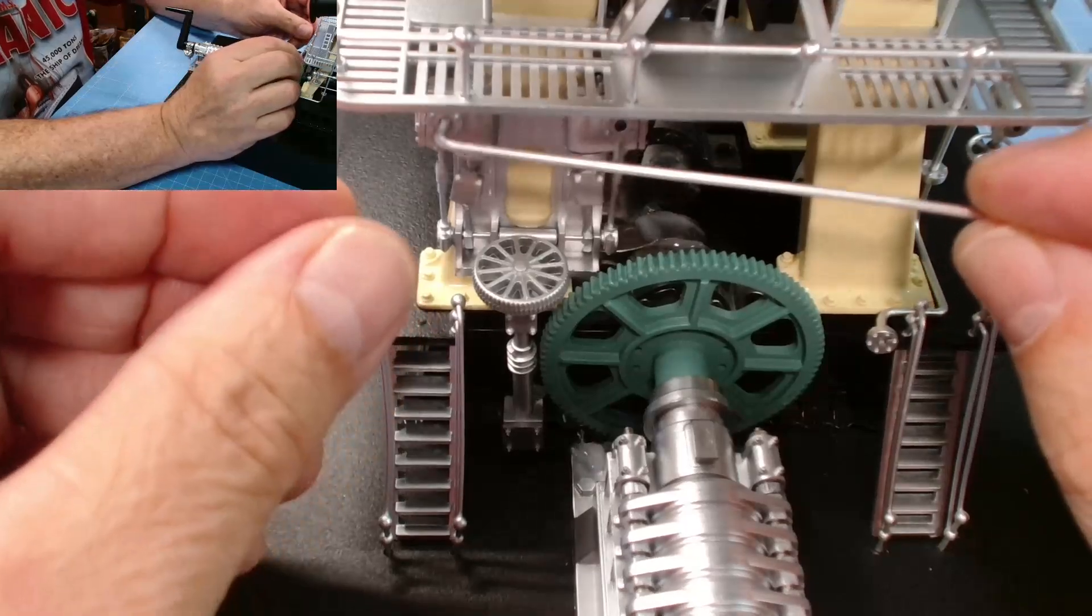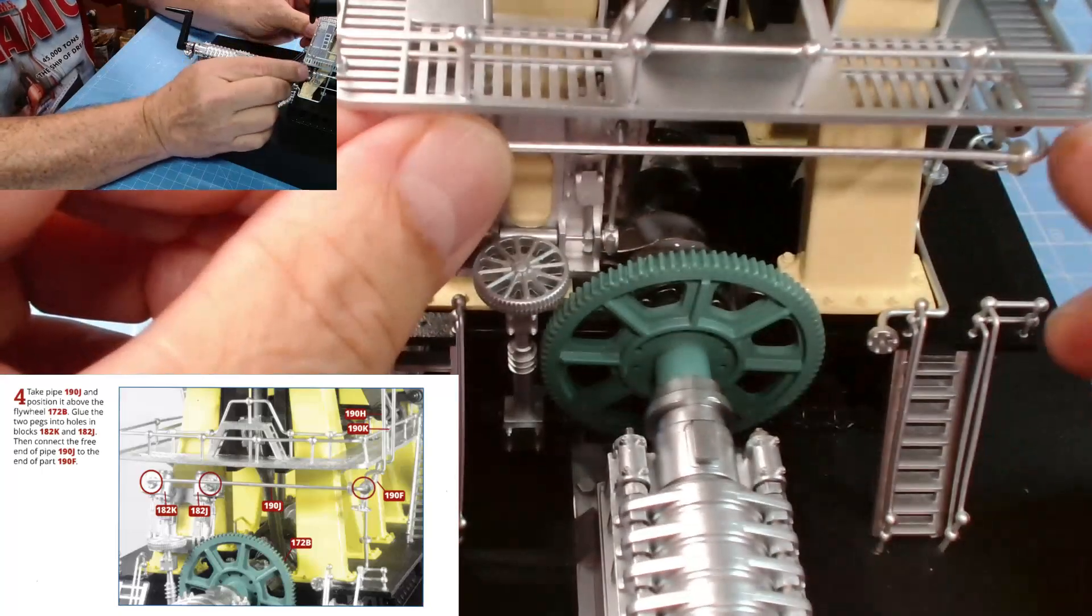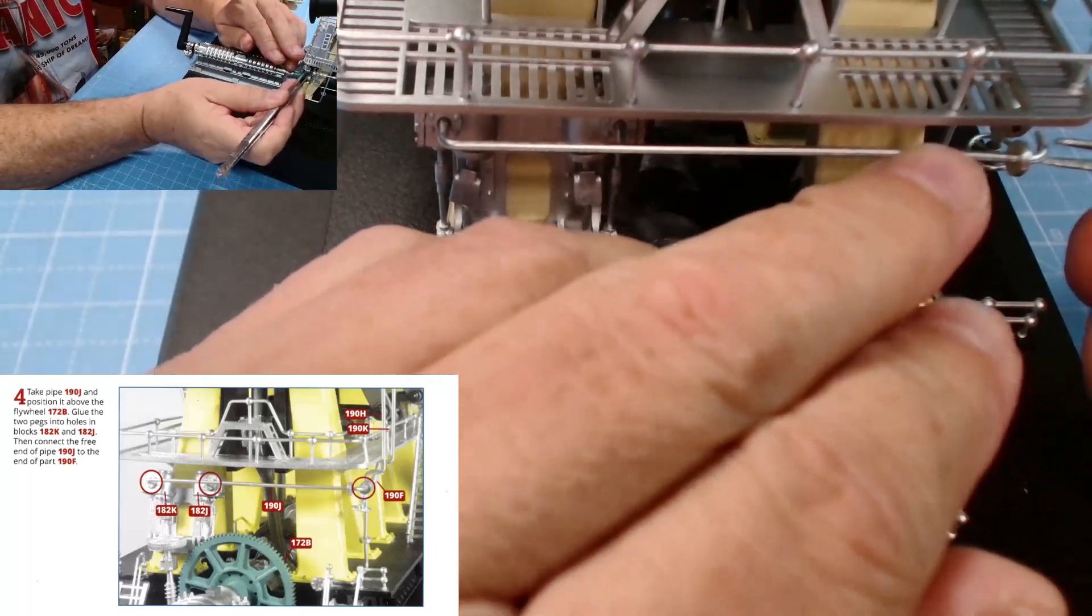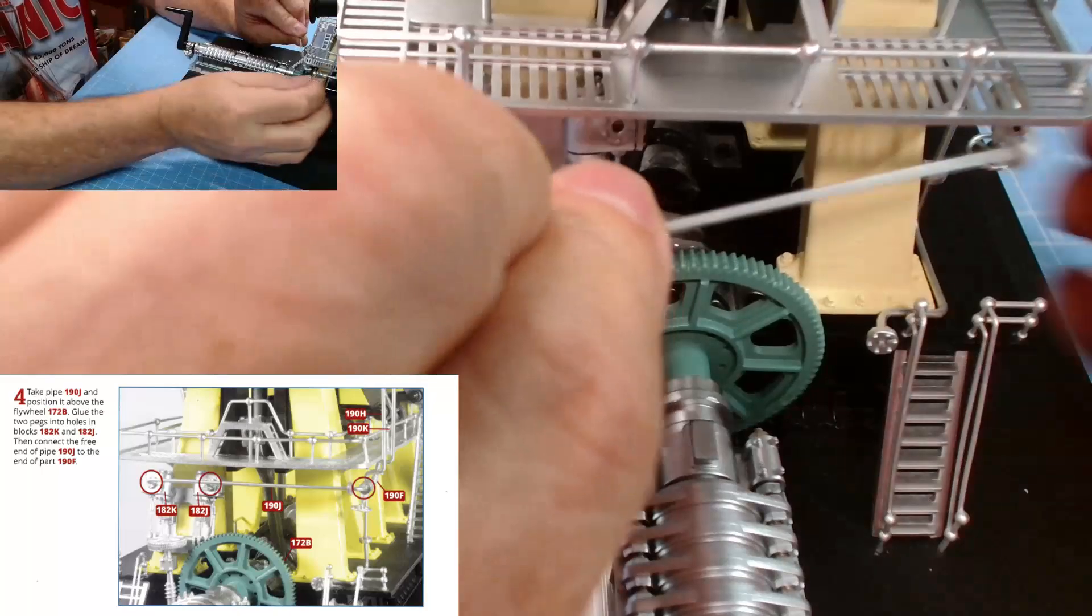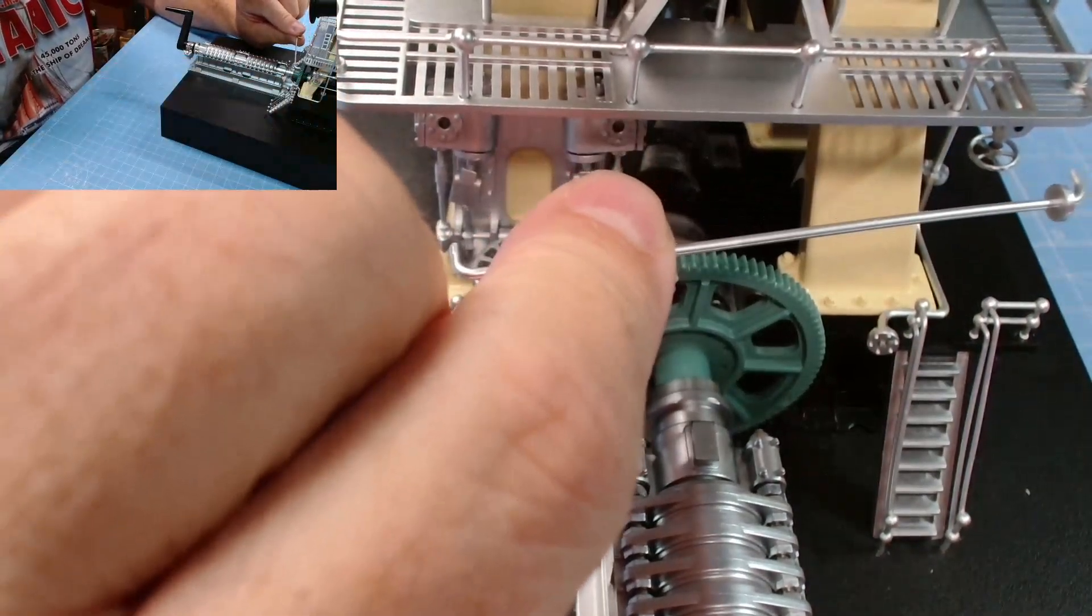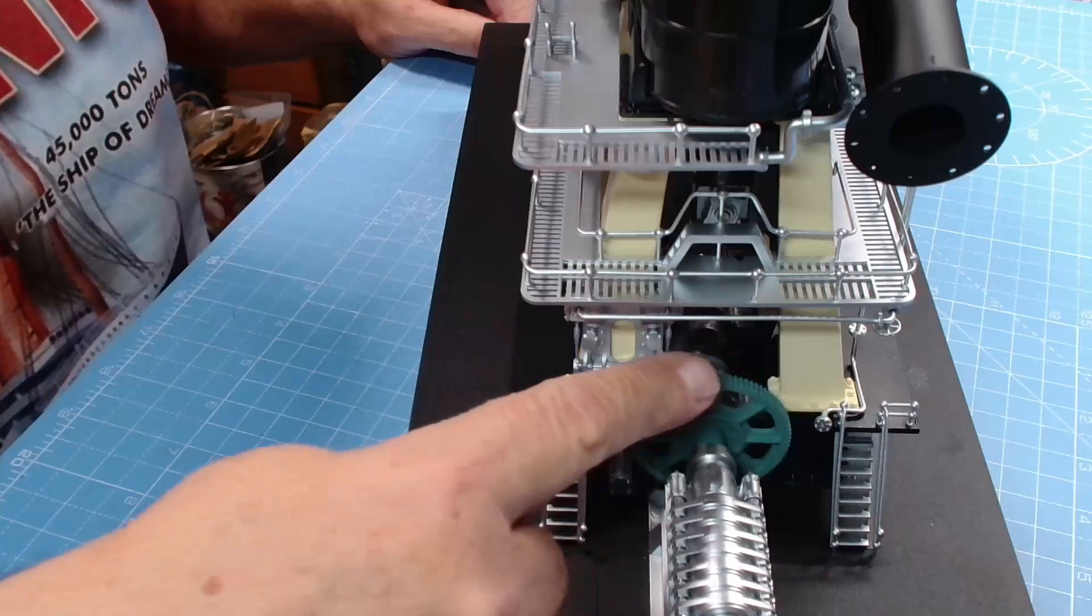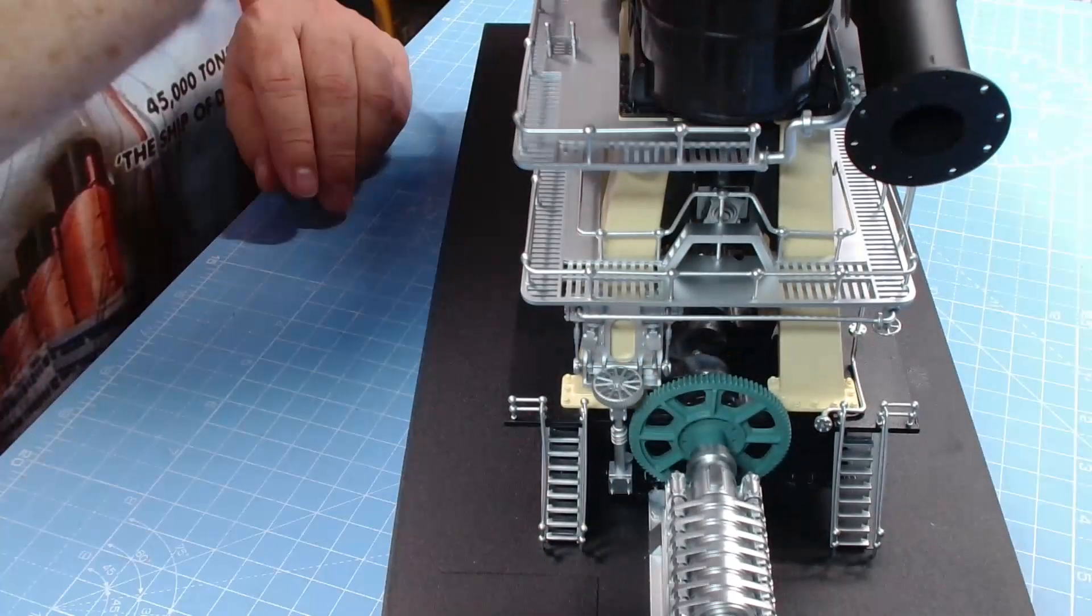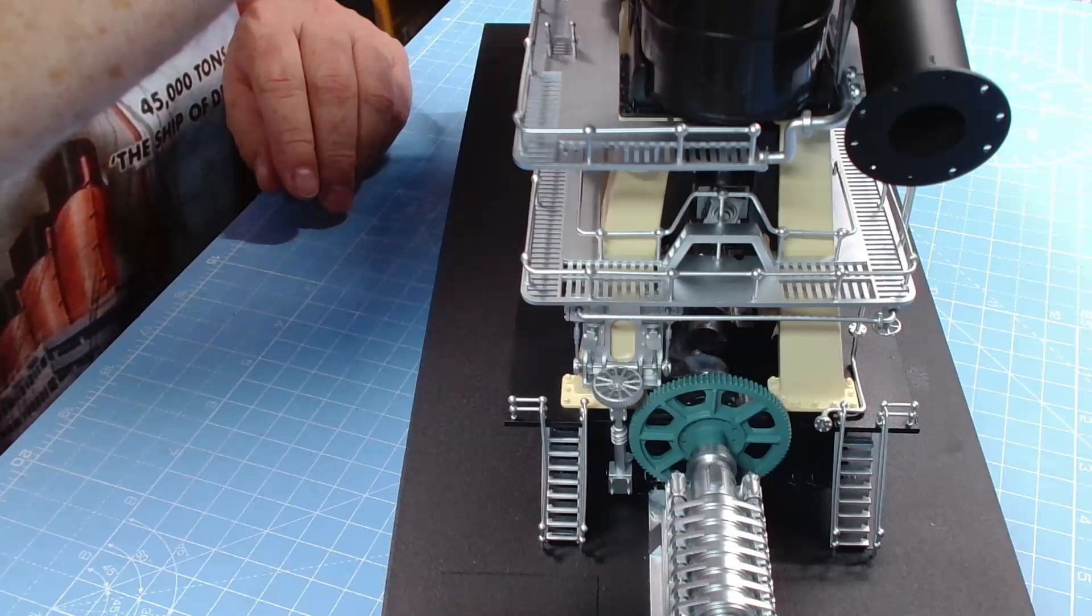All we're left with with the pipe work is 190J, which will go into those two holes just there and then link up here. Well it would have done, it goes into there anyway. I'll get that glued in place. There you go, you can see the pipe work now just here coming along into this configuration here. You can see the two wheels on the top down here, there we go, just in front of the tweezers. Excellent stuff.